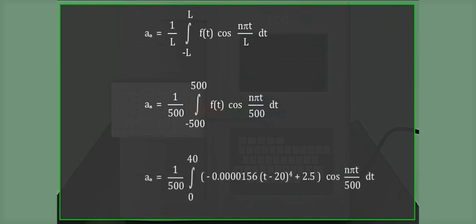a₀ equals 1 divided by 500, integral from 0 to 40 of minus 0.0000156 times (t minus 20) to the power 4 plus 2.5, times cos(nπt divided by 500) dt.